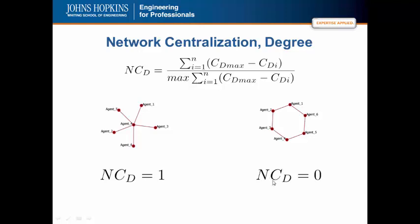The value for the ring network is going to be 0. That is because the maximum centrality — in this case looking at degree — the degree centrality would be 2. Every node is 2. So for agent 1, 2 minus 2 is 0; for agent 2, 2 minus 2 is 0, etc. So every value in the numerator will be 0, creating a network centralization of 0.